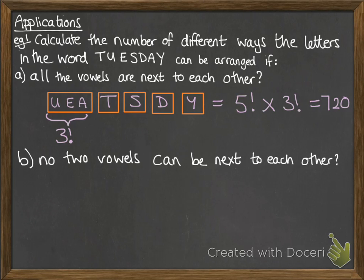Next, what if no two vowels could be next to each other? This one's a little tricky to get your head around, so take your time. What you've got to think about here is first of all place out the consonants. We need to spread them out with spaces in between because we're going to fill those spaces with the vowels so that they don't go next to each other.